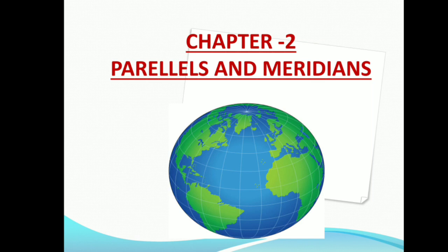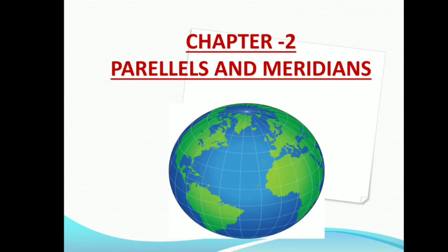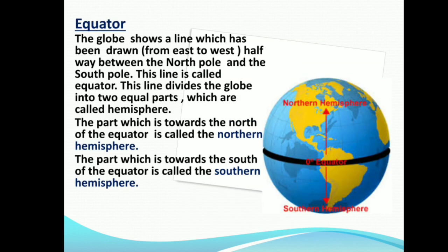The parallels and meridians cut each other at right angles, 90 degrees. The equator is the longest parallel which divides the earth into two equal parts. These equal parts are called hemispheres.